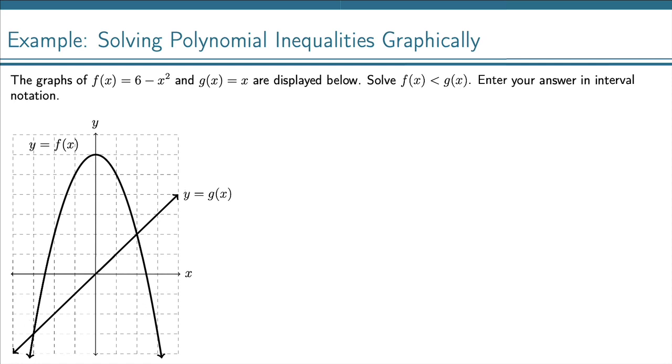And we see that occurs over here to the left and over here to the right. Because this is a strict inequality, we don't want to include those points of intersection.